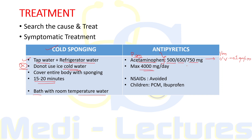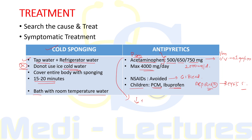The maximum dose of paracetamol is 4000 mg per day, but in chronic liver failure the maximum dose is 2000 mg per day. NSAIDs are avoided because they affect platelets and can lead to GI bleeding. In children, paracetamol and ibuprofen are preferred, and aspirin must be avoided because of the risk of Reye's syndrome. Paracetamol reduces fever as well as other systemic symptoms like headache, myalgia, and arthralgia. This covers the basics of fever for OPD practice — causes, approach, investigations, and symptomatic treatment.